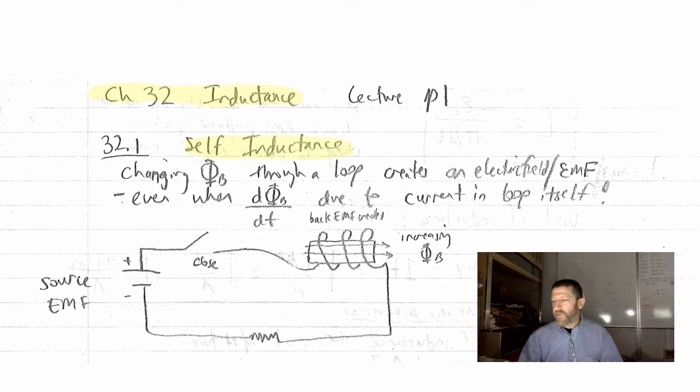So any changing magnetic flux, phi B or phi B, however you decide to pronounce it, through a loop creates an electric field and an EMF. And the thing is, it even creates this when the changing magnetic flux is due to the current in the loop itself.